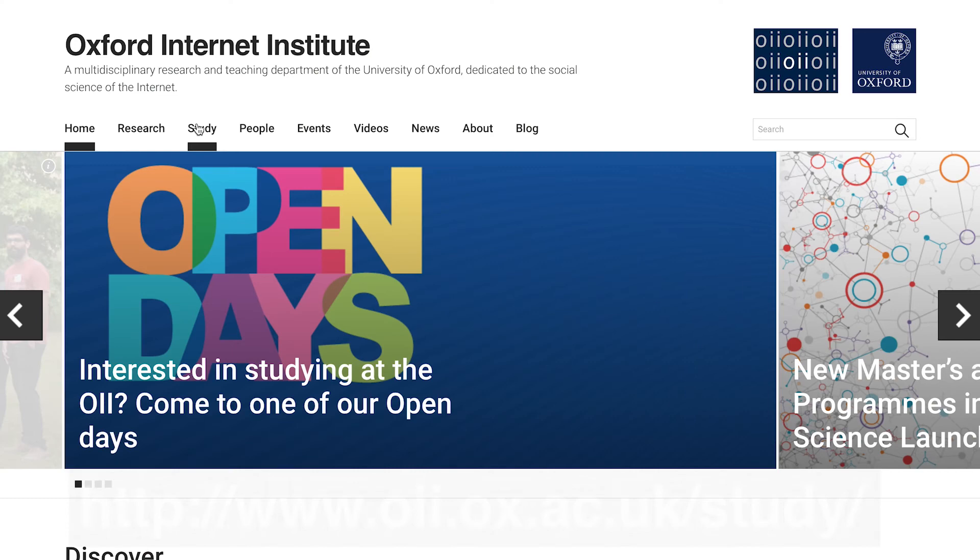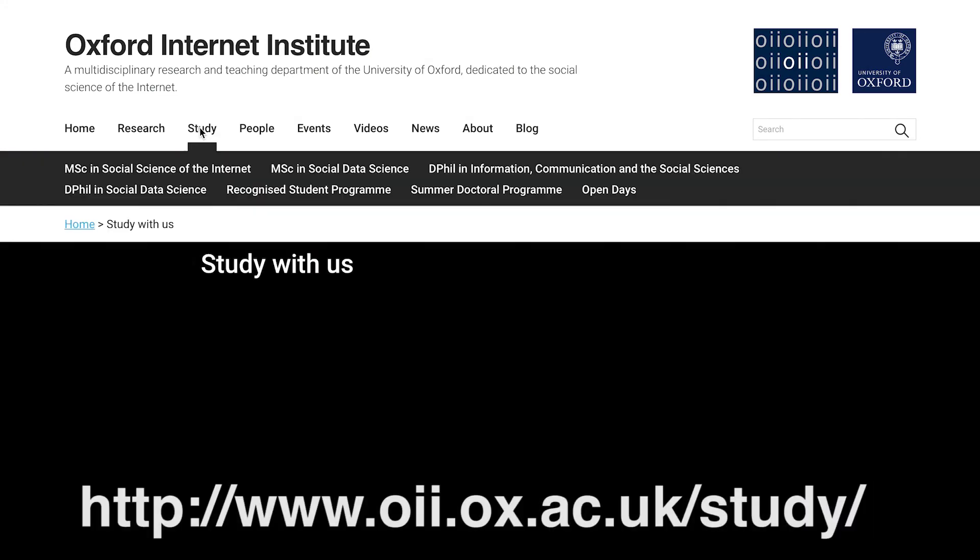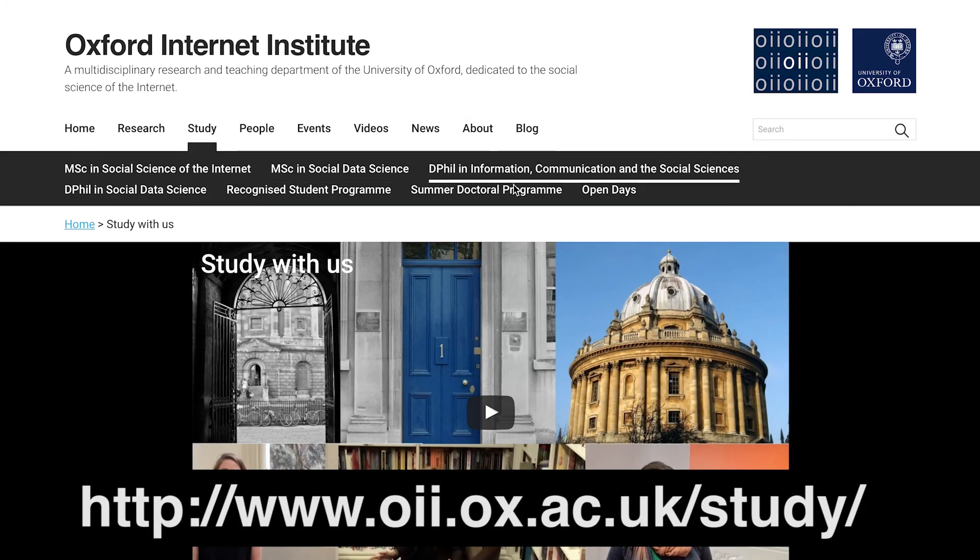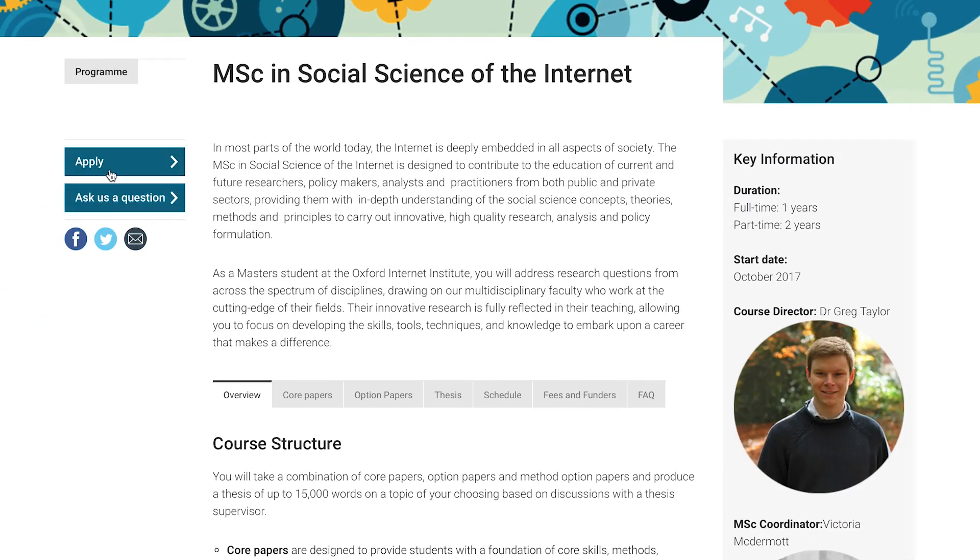Thank you for watching this overview of the MSc in social data science. I encourage you to check out our website where you'll find more information, including the option to apply for both the MSc and the DPhil program in one application, a joint MSc plus DPhil or one plus three, and also the ability to sign up for email alerts as application deadlines approach. If you have further questions, please do get in contact. Thank you.